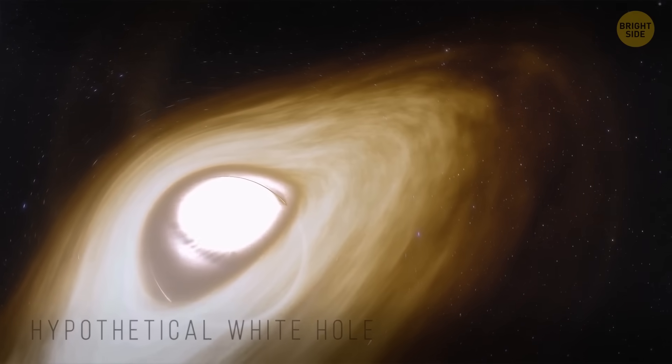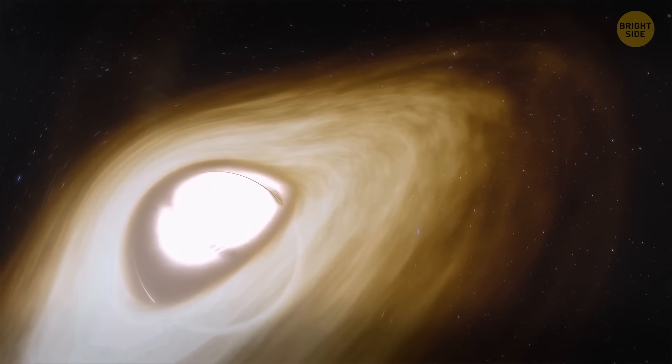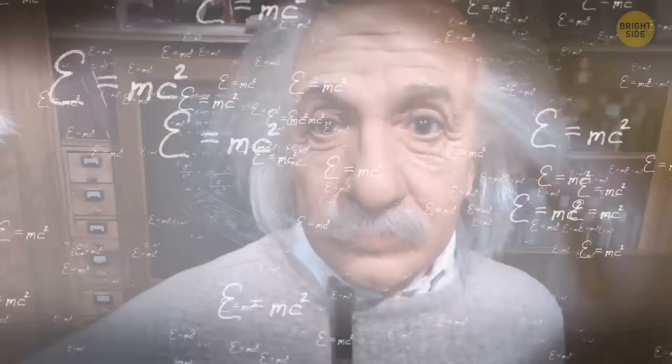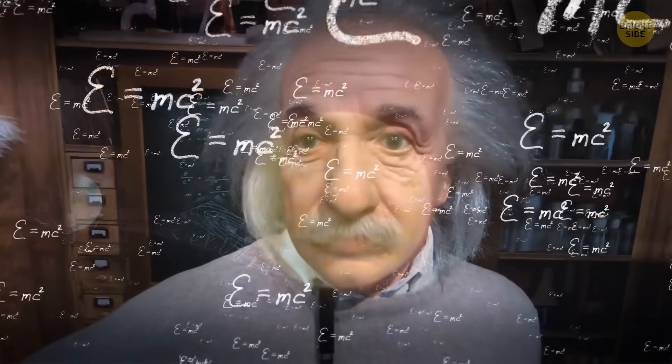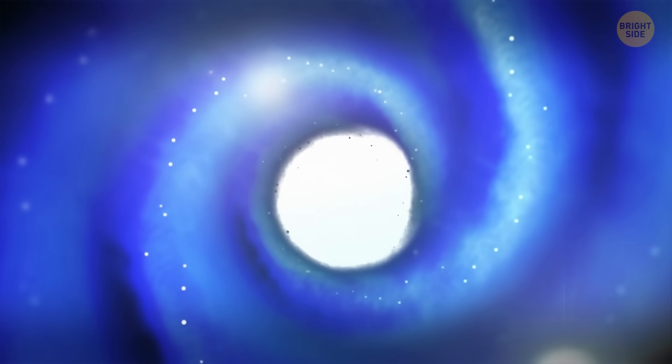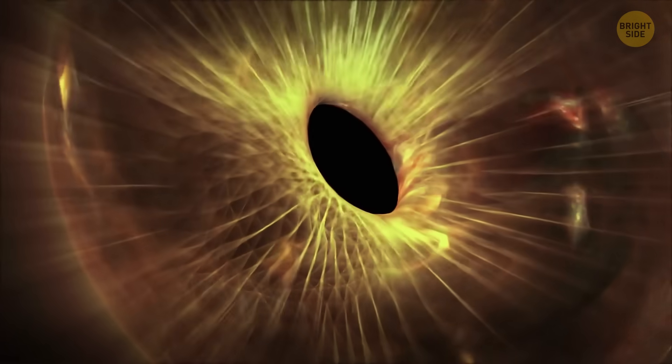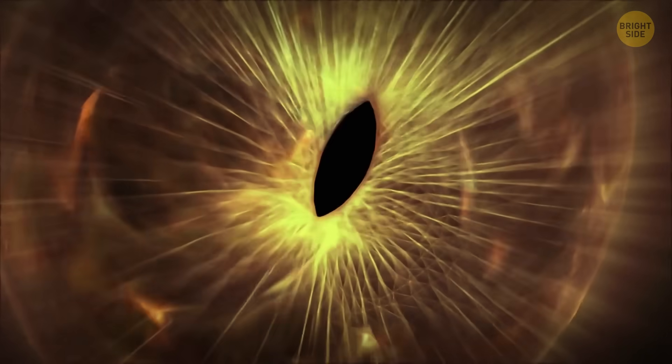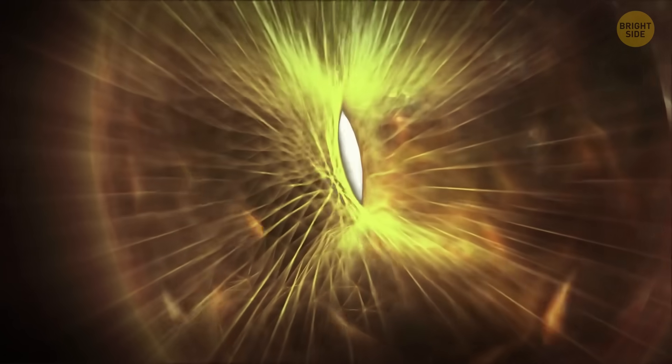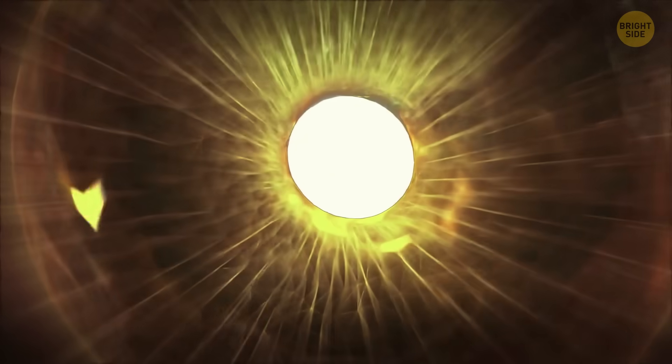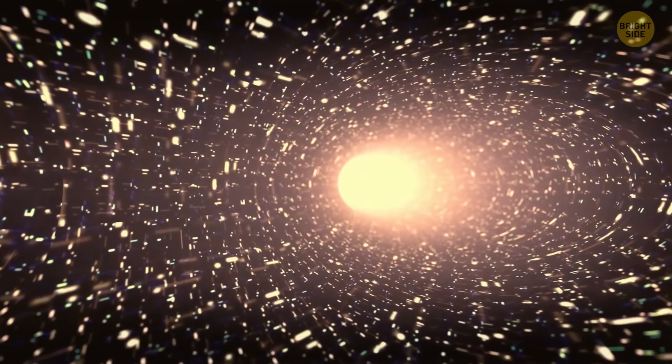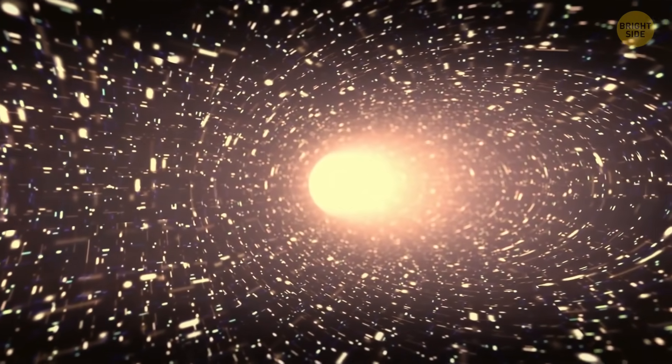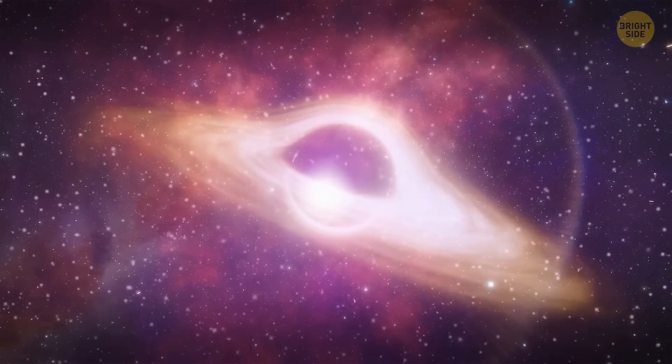A hypothetical white hole is a bizarre space object that is the opposite of a black hole. It's intensely bright and was first mentioned by Einstein in his theory of gravity. Most often, scientists talk about white holes in the context of wormholes. There's a theory that a black hole is like some sort of entry point to a tunnel that takes you through space and time. In this case, a white hole might be an exit located somewhere else in the universe. On the other hand, white holes don't necessarily need to be exits from wormholes.